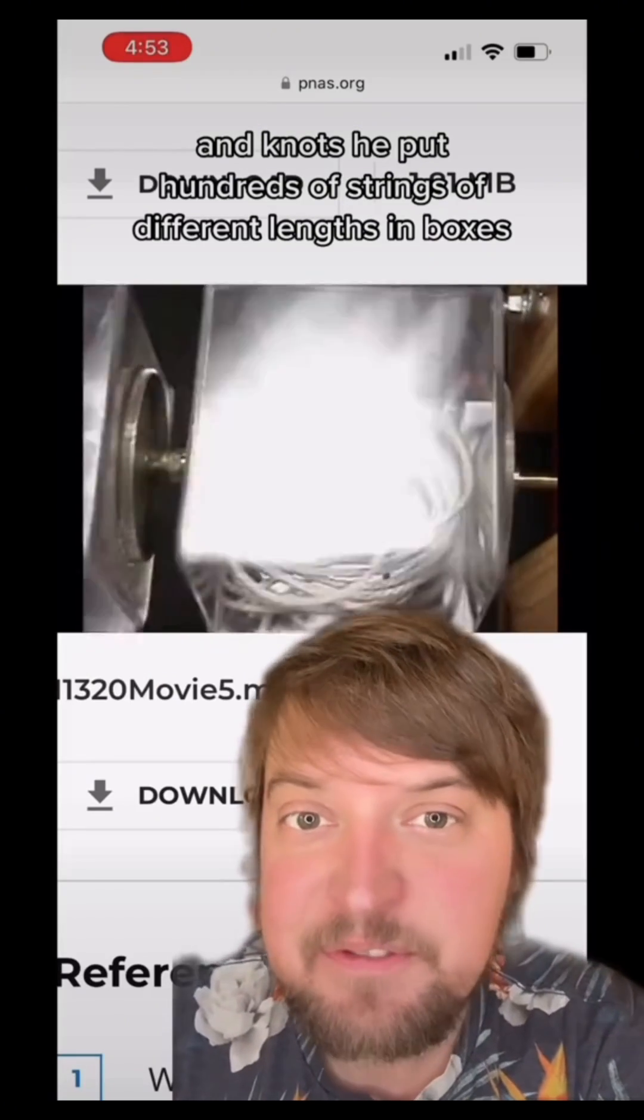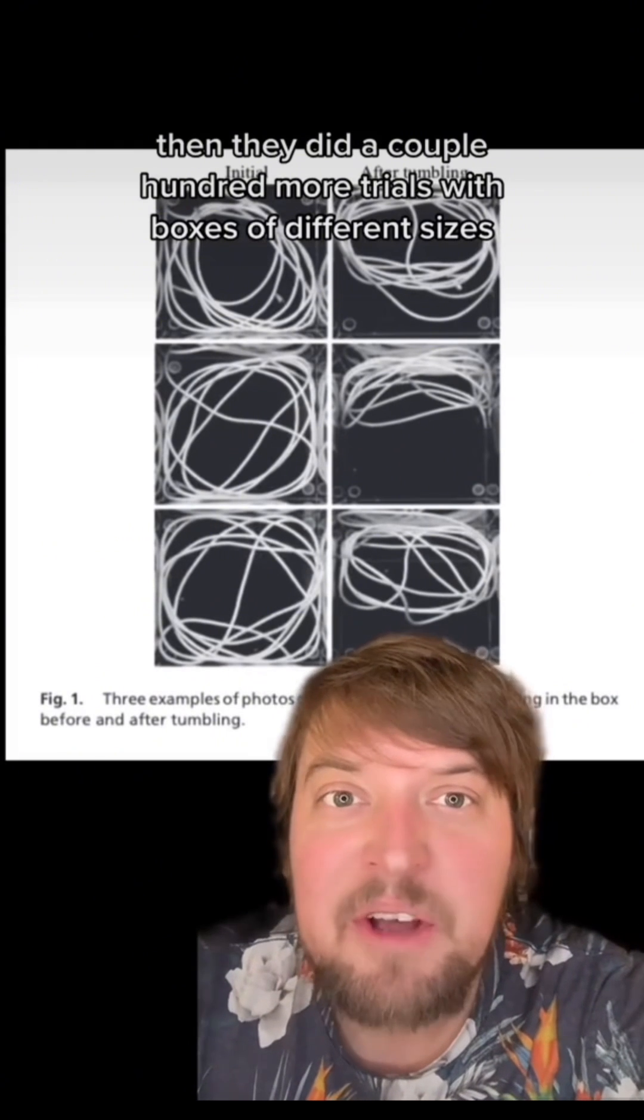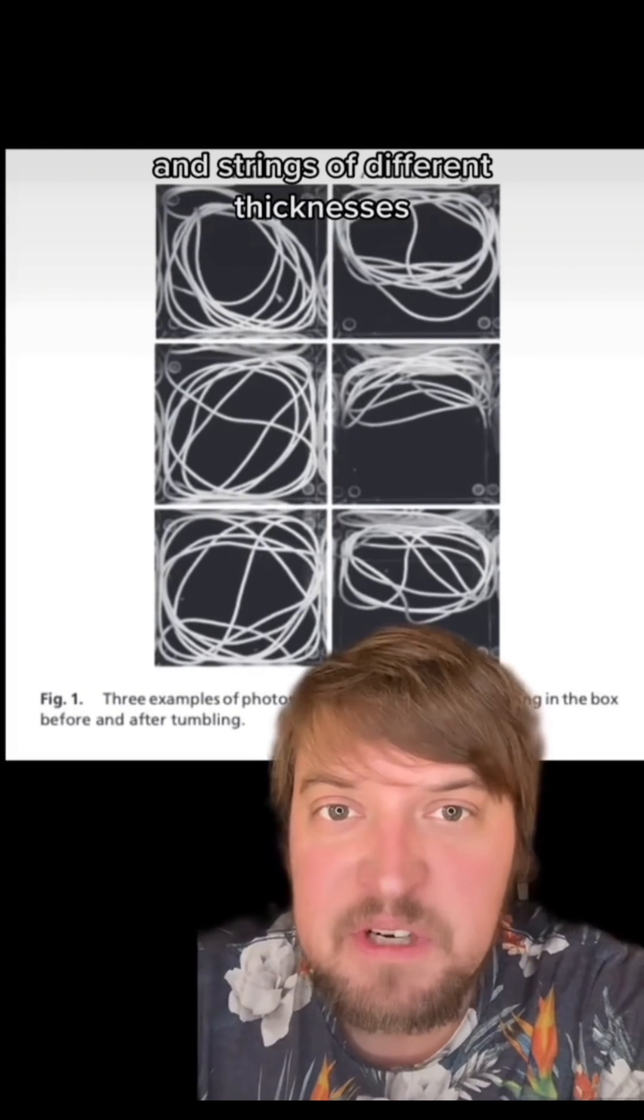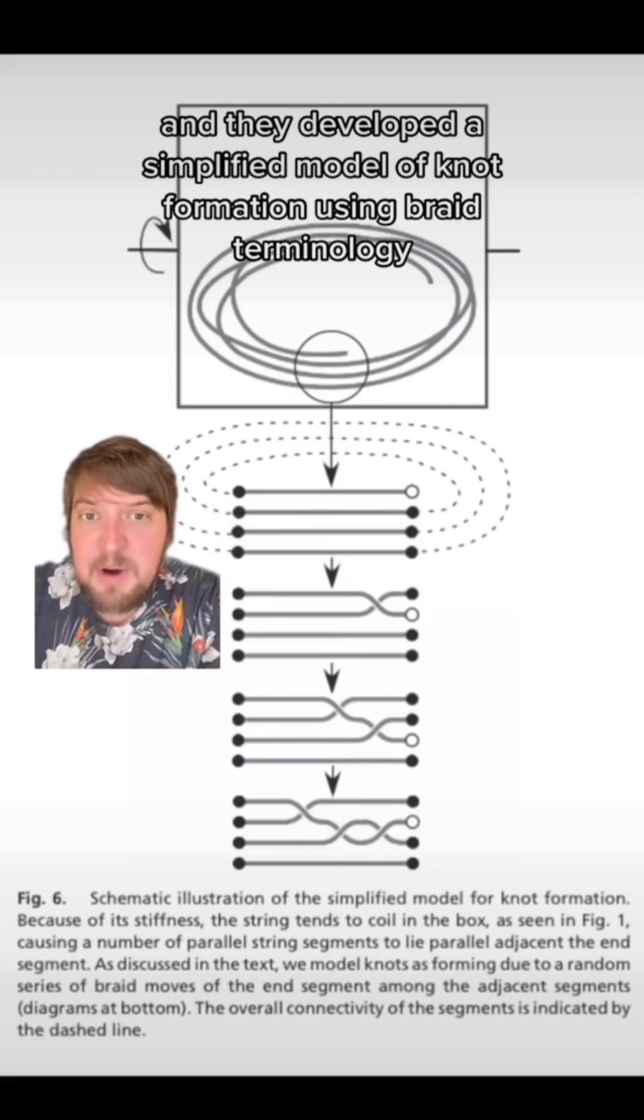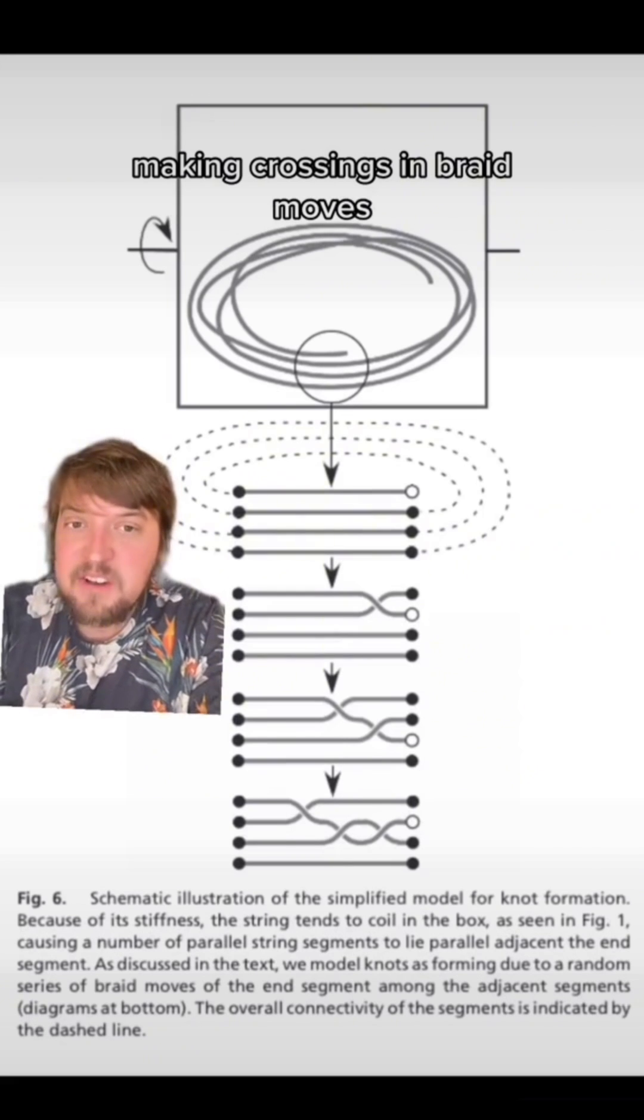He put hundreds of strings of different lengths in boxes and gave them a spin. Then they did a couple hundred more trials with boxes of different sizes and strings of different thicknesses. They developed a simplified model of knot formation using braid terminology, where the strings go randomly over or under each other making crossings in braid moves.